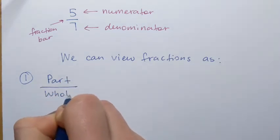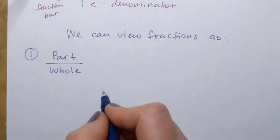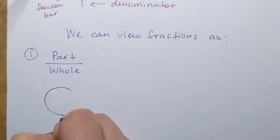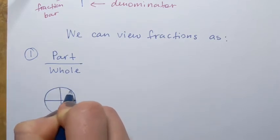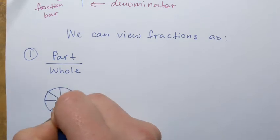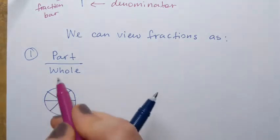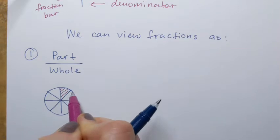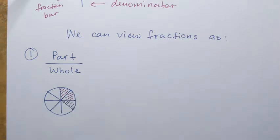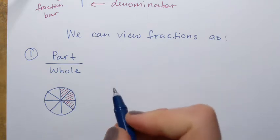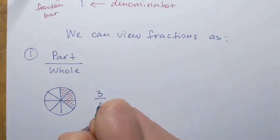So what that means is, let's say I have a pizza and I slice it into eight equal slices. And let's say I eat three slices. The portion of the pizza that I ate can be expressed by the fraction three-eighths.